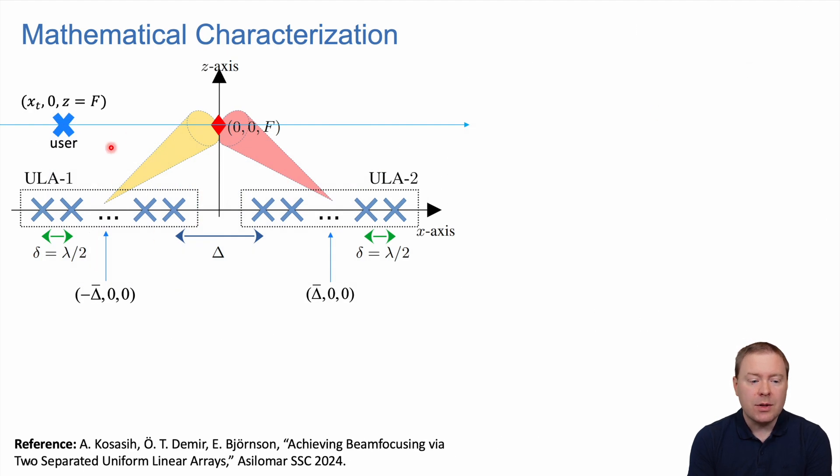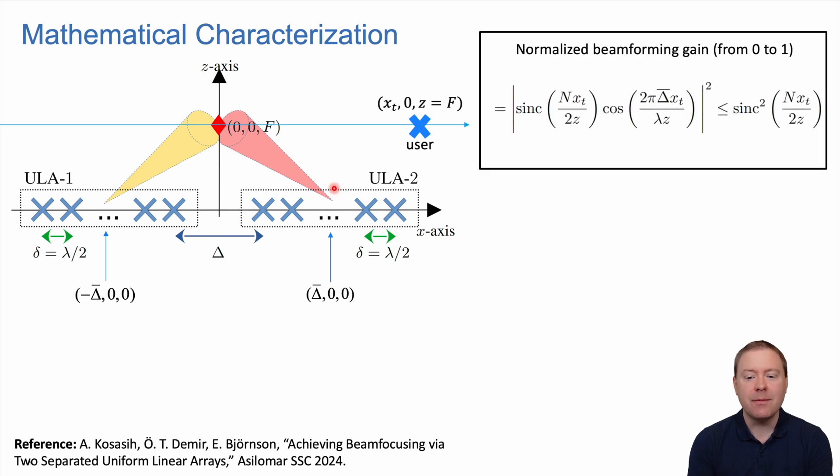We needed a mathematical characterization. Here is the focus location of the user, and we move another sample user across a line parallel to where we deployed our two arrays. We compute the normalized beamforming gain between zero and one for every location along this line. Here is a formula from a new paper at the Asilomar conference last year.